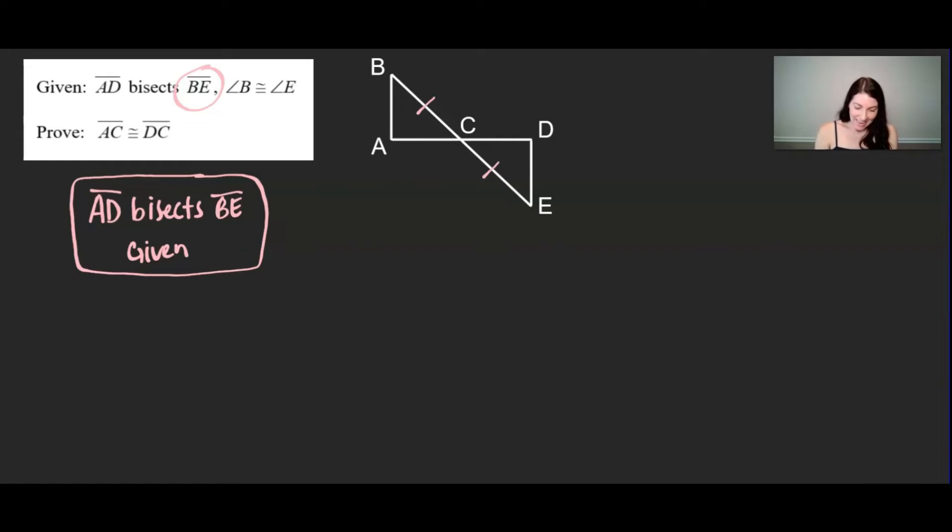So the fact that AD bisects BE, which is a given, tells us that segment BC will be congruent to segment EC. And that's just the definition of a segment bisector.